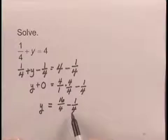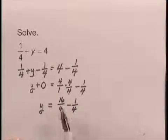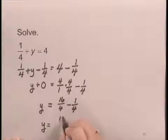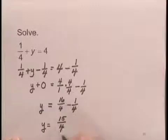We have a common denominator of 4, so I can subtract the numerator, 16 minus 1, and write it over the denominator 4. So I have y equals 15 over 4.